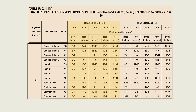Since 2x8 members are sufficient, we should check if the smaller and more economical 2x6 members are sufficient. Based on the same table, 2x6 Douglas fir number 2 rafters supporting 10 PSF dead load and 20 PSF live load have a maximum allowable span of 11 feet and 11 inches. This is less than the 12.5 feet required in this project. Therefore, we will stick with the 2x8 rafters, which have been shown to meet the span demands.